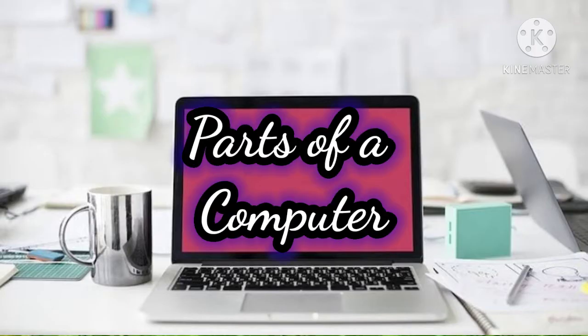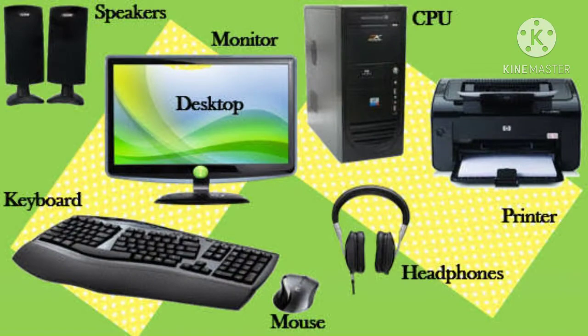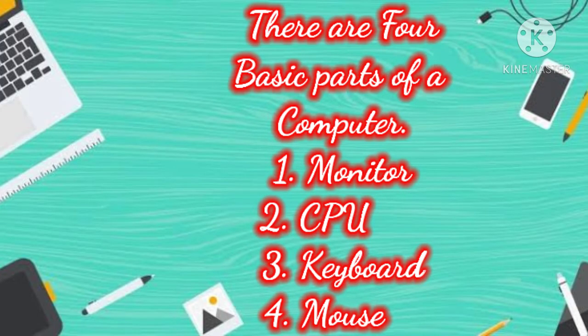Now we learn different parts of our computer. Speakers, monitor, CPU, keyboard, mouse, headphones, and printer are parts of our computer. There are four basic parts of a computer: number one, monitor; number two, CPU; number three, keyboard; number four, mouse.